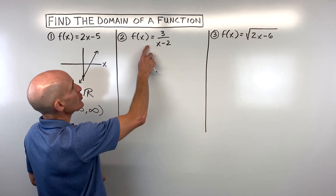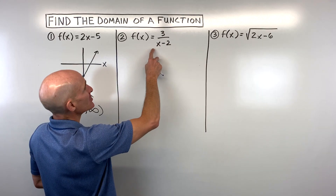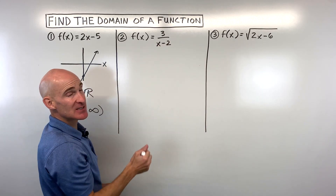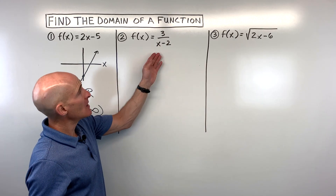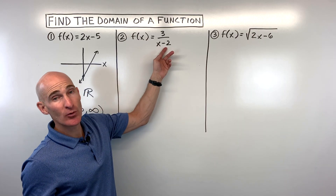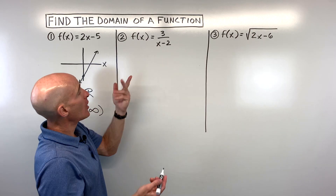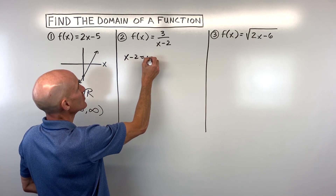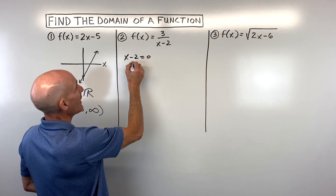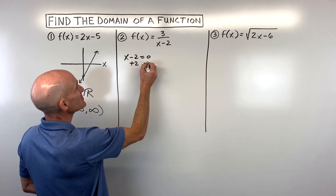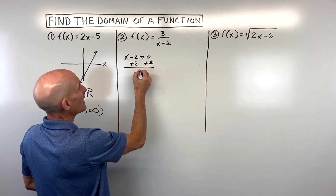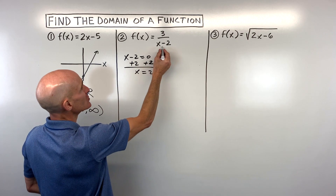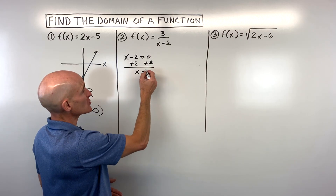So let's take a look at example number two. Notice we have a fraction here, and we can't divide by zero. That means we ask: what would make this denominator equal to zero? We can make a little equation — x minus two equals zero — add two to both sides. And you can see that if x is equal to two, then I'm going to have zero in the denominator.